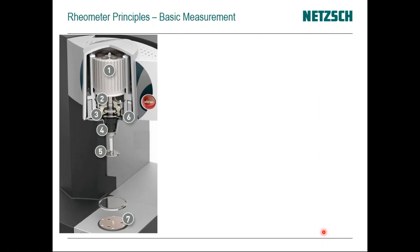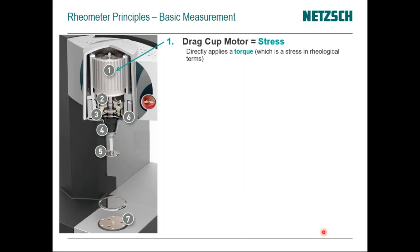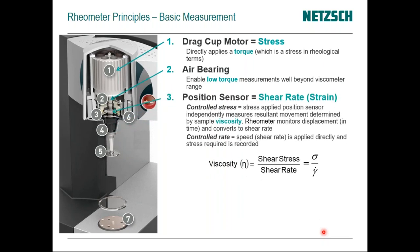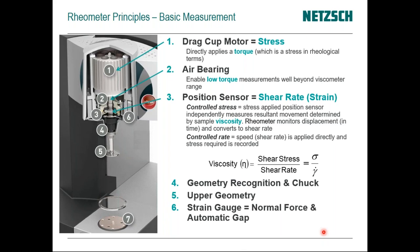The basic principles of measurement: the rheometer has a motor at the top which applies torque or stress onto the sample. Torque is generic rotary force; stress is force per unit area. There's an air bearing with very low friction that allows the rotor to spin freely, and we measure how fast it rotates with a position sensor. From the shear rate and shear stress applied we can determine the viscosity. We also have a geometry recognition system and chuck (item 4), the upper geometry (item 5), strain gauges to measure normal force, and the temperature controller at the bottom (item 7) which does not move.